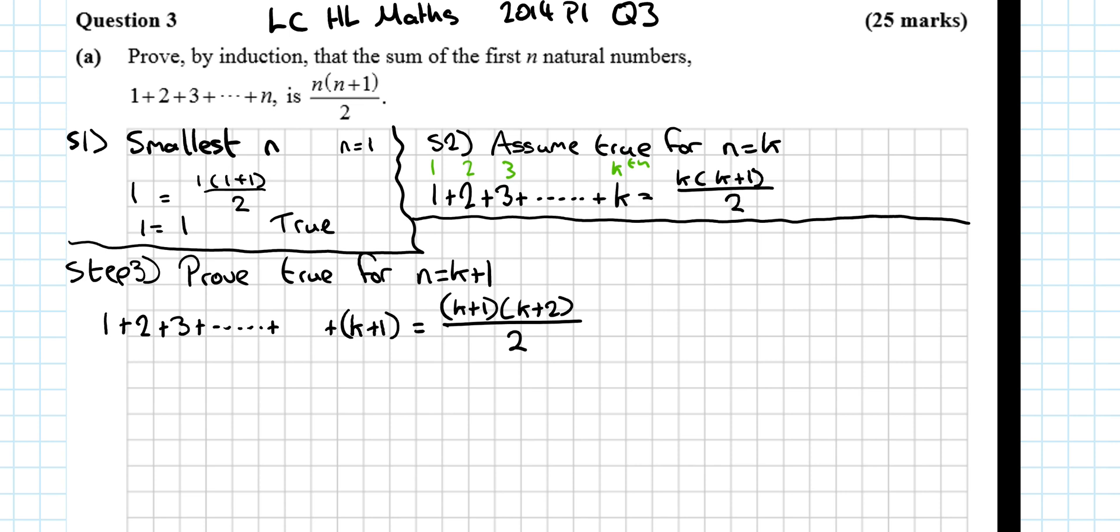Now the reason I've left the gap over here is because this is the first term, second term, third term, k plus 1th term, but what comes before the k plus 1th term? The kth term, so I can stick in k. And I don't like the dot dot dot section over here, and I can notice that this dot dot dot is equal to the left hand side here, which is actually equal to the right hand side here.